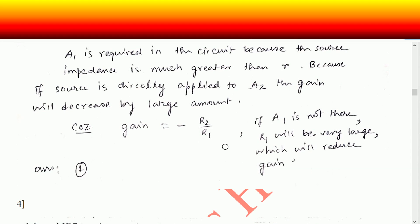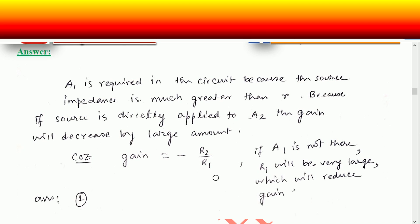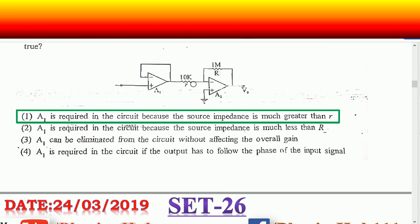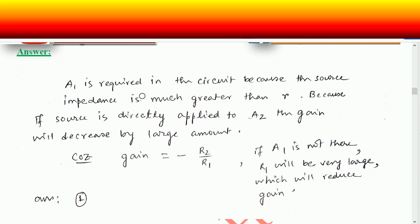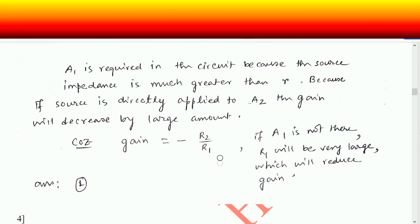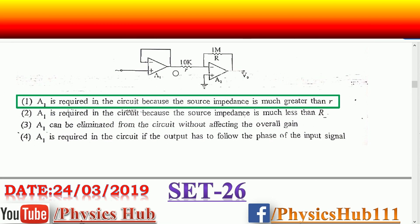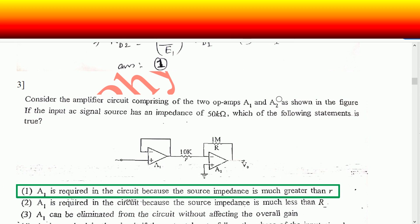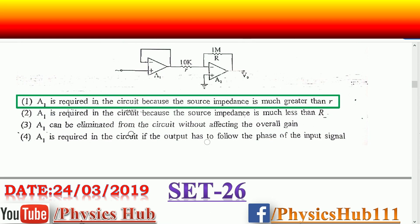R2 is the feedback resistance and R1 is the input resistance — 1 mega ohm by 10 kilo ohm. If we do not add A1 and the source is directly applied, the gain will decrease by a large amount because the source resistance and R1 will be in series, increasing the denominator and decreasing the gain. A1 provides low output impedance — op-amp output impedance is very low — so you get a good gain. Option one is the correct option.